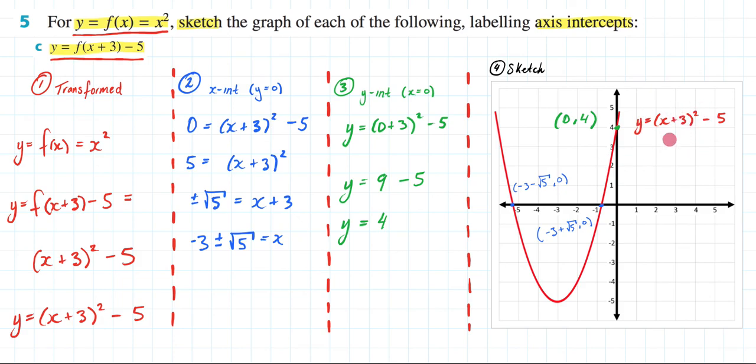So I have my newly transformed rule. I've given it a sketch. I have found my x intercepts and my y intercept. Hopefully this was helpful in answering question 5c of exercise 7a.